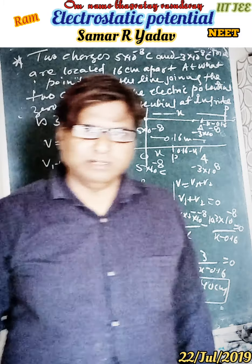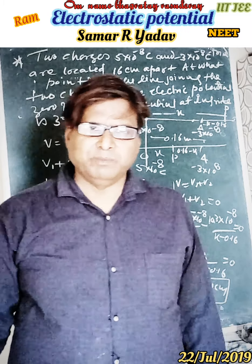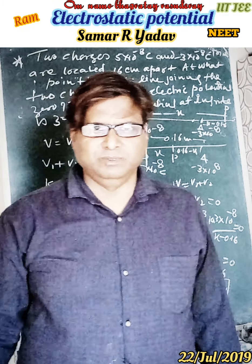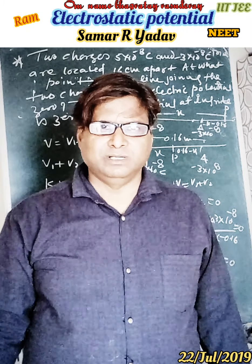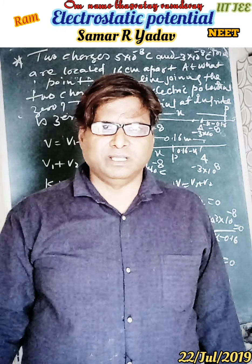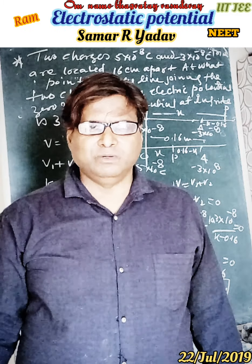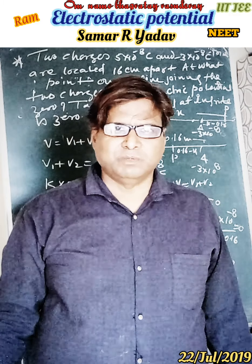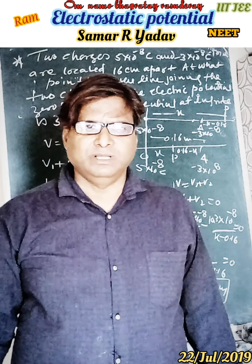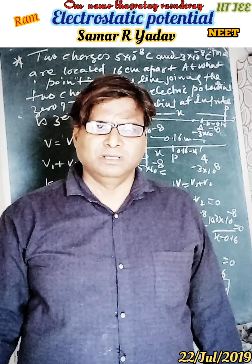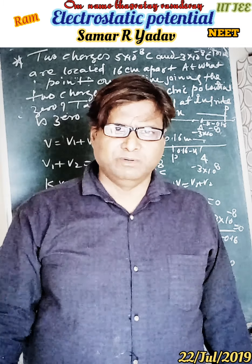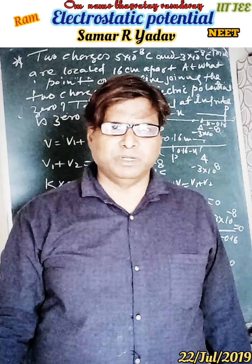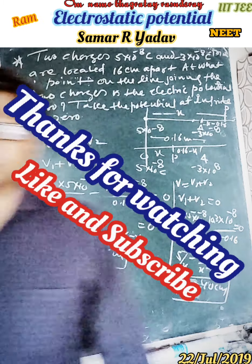To summarize this numerical: remember the potential at infinity is zero. There are two possibilities — the point can be between the two charges, or outside on the line. There are two points where the potential is zero: one is x equals 10 cm, and the other is x equals 40 cm. Thank you very much.